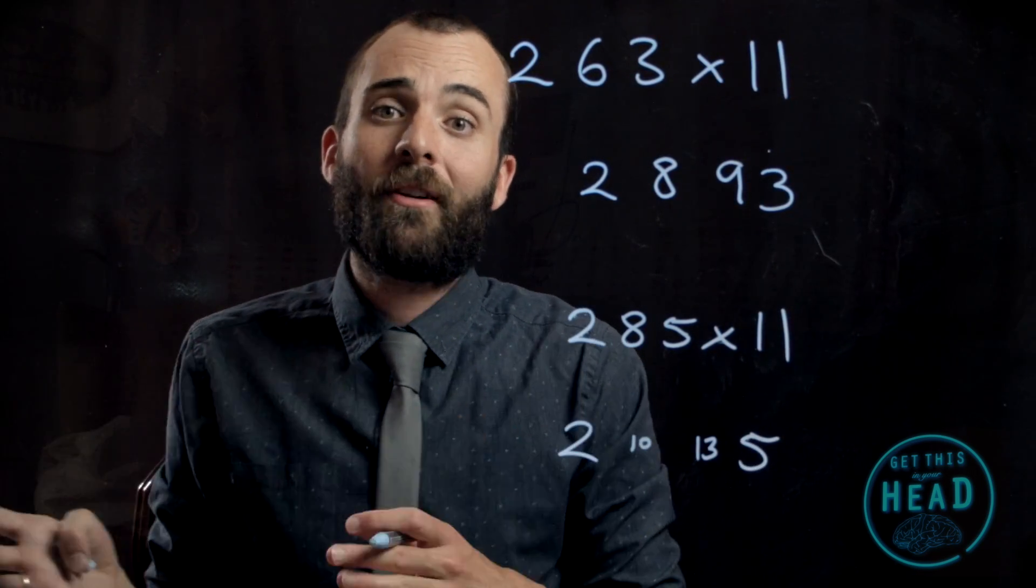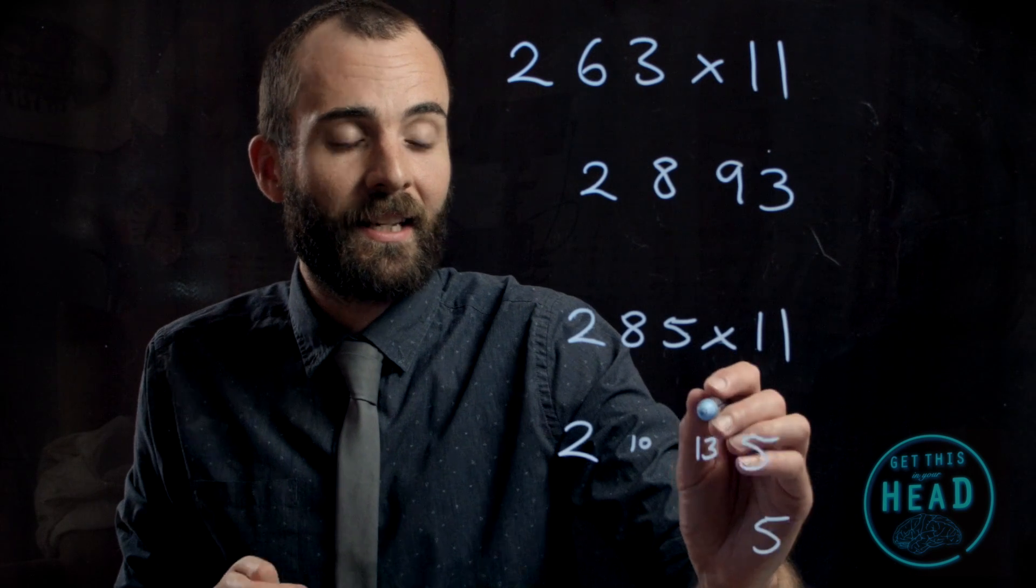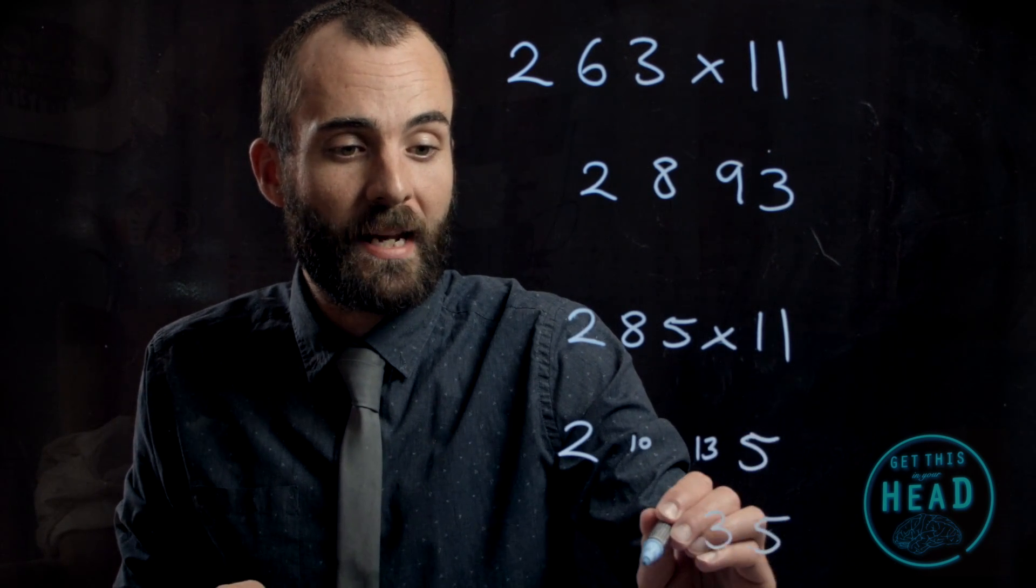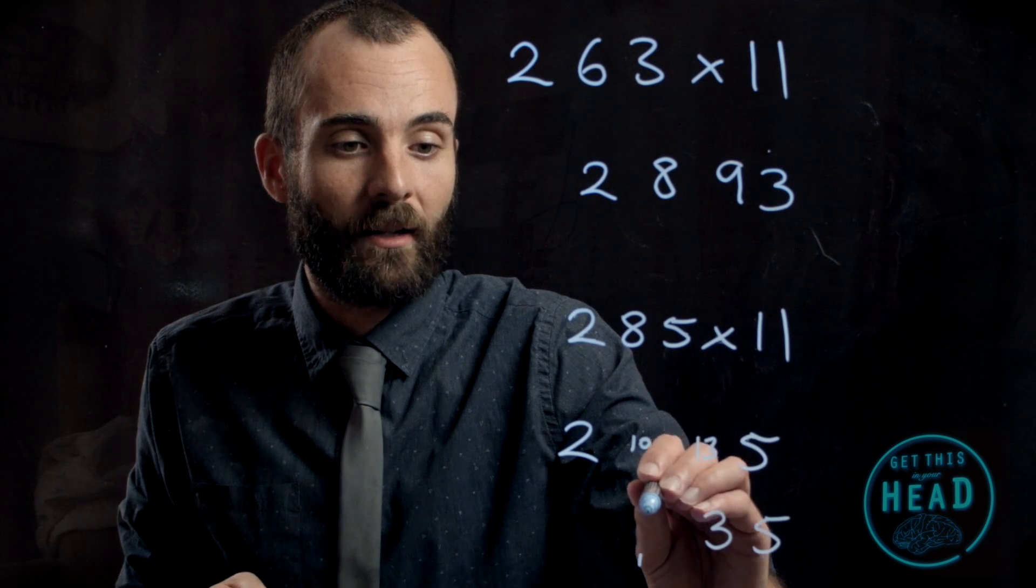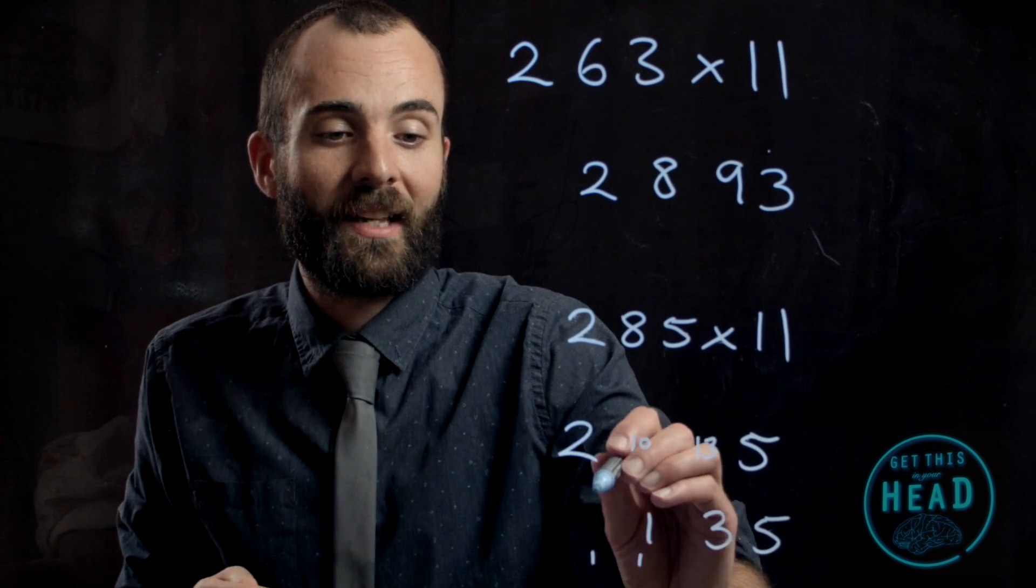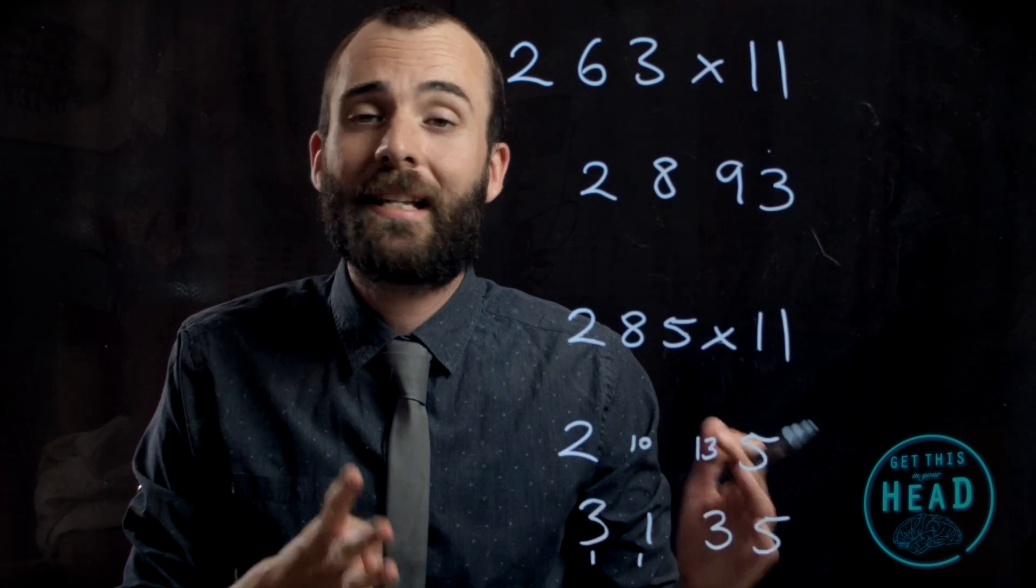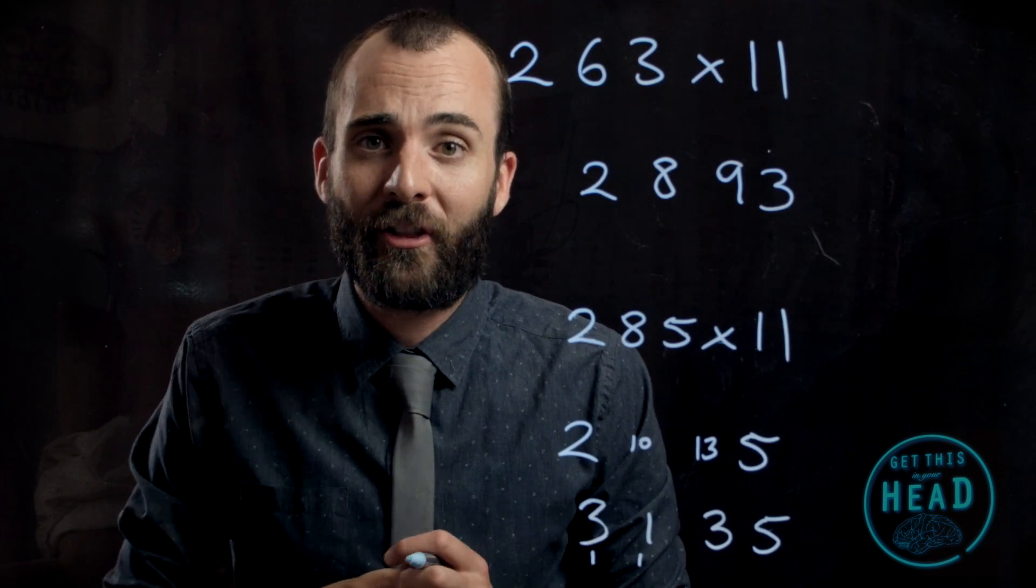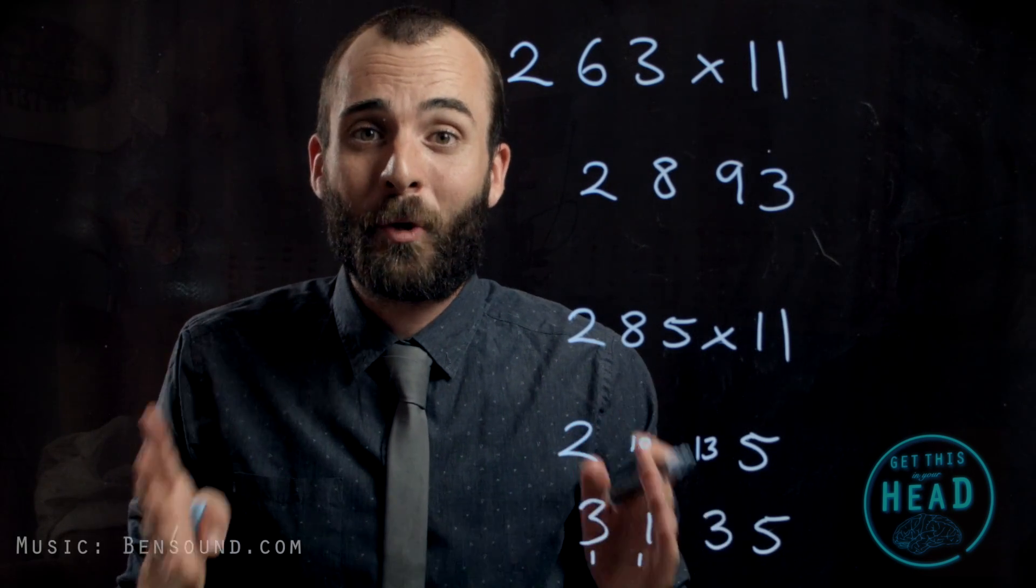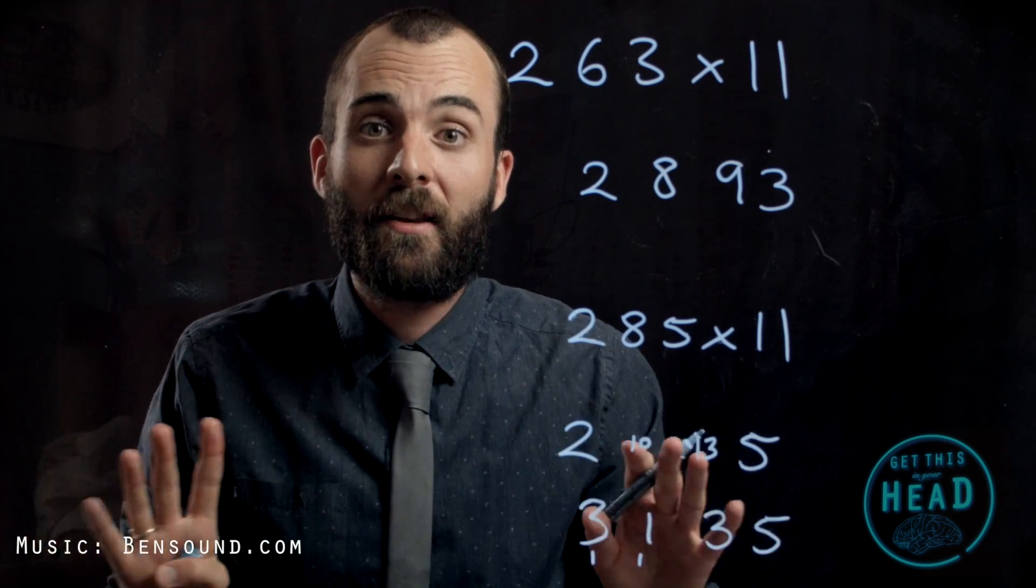So now we have to carry the tens like we did before. The 5 stays as it is, 13 becomes 3, carry the 10 gives us 11, that's going to be 1, carry again gives us 3. It'll be 3135. 285 multiplied by 11 is 3135. Now that is a quick and easy way to do your 11 times table for any number.